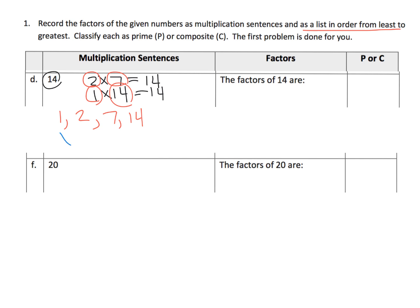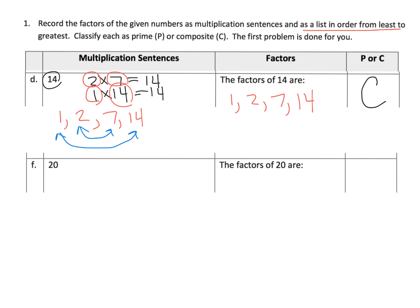We know we're right because every factor has a partner, which suggests we found them all. Because we have more factors than just one and fourteen — we have extra pairs — we know that fourteen is a composite number. Composite means you have a list of factors that is more than just one and itself. Let's do twenty next.